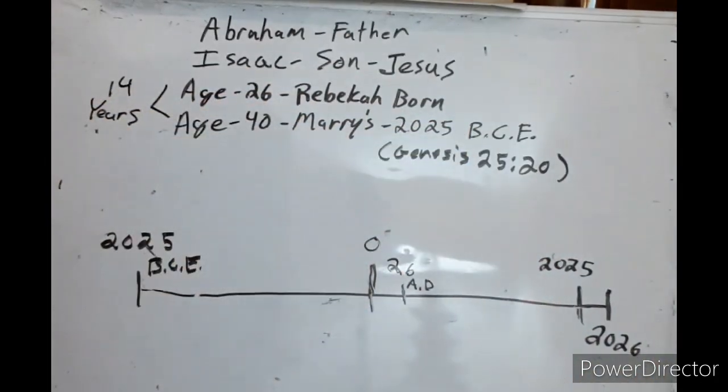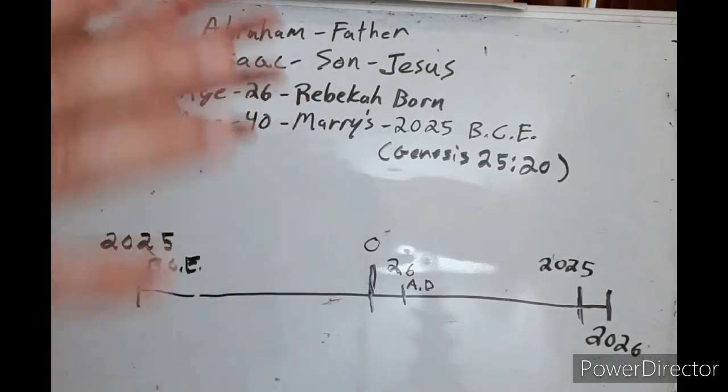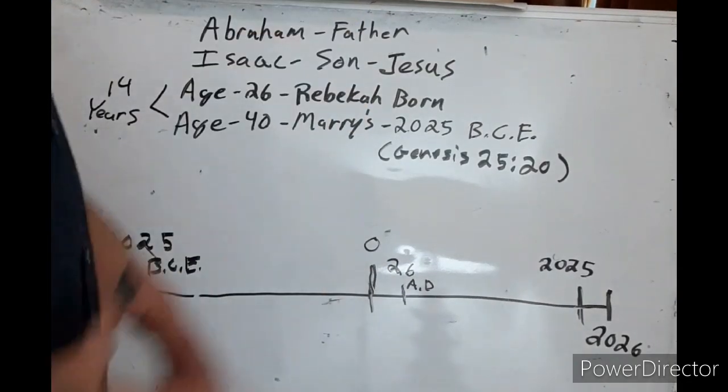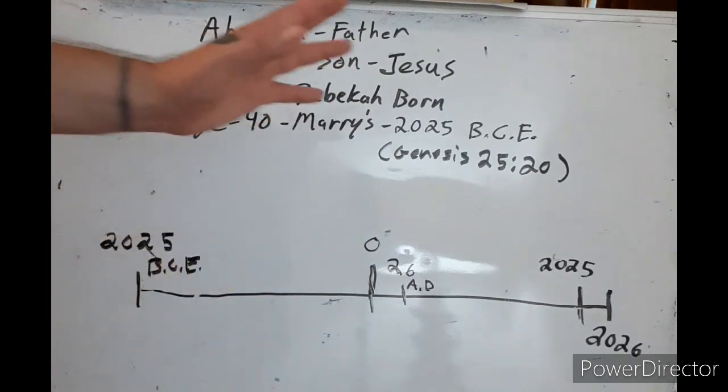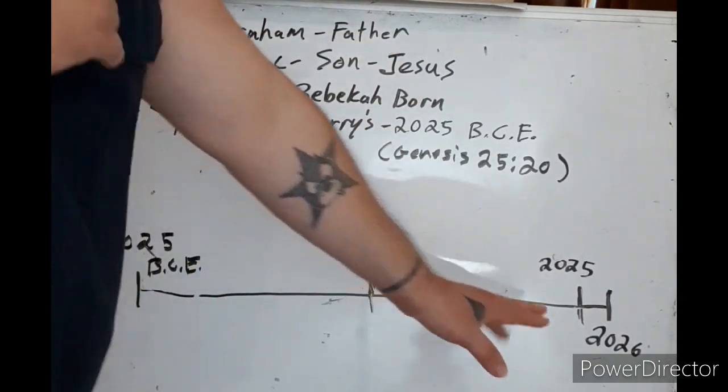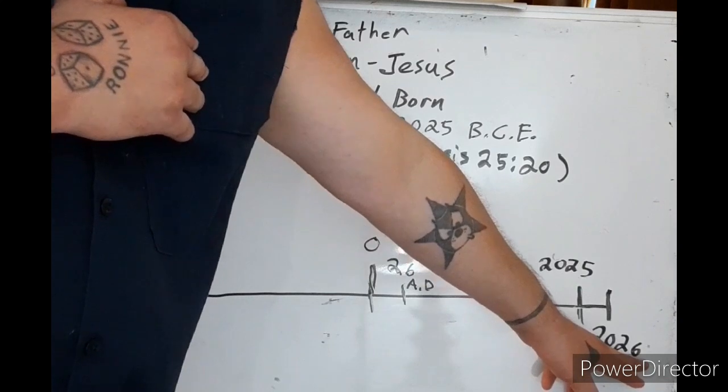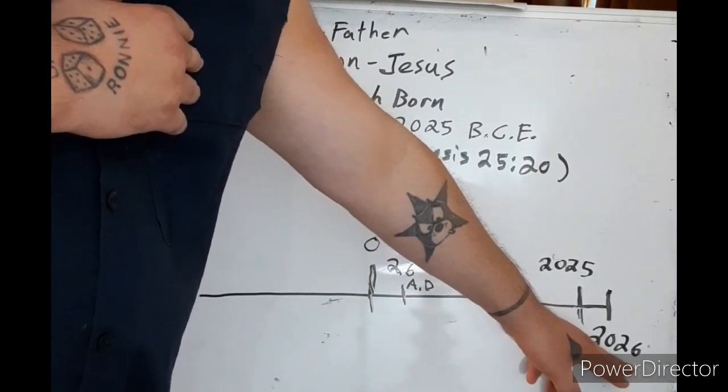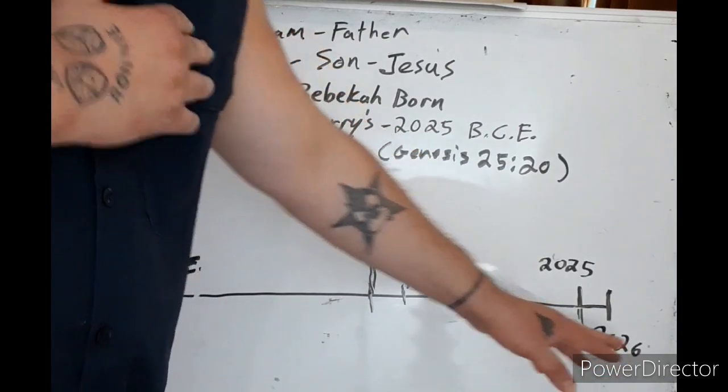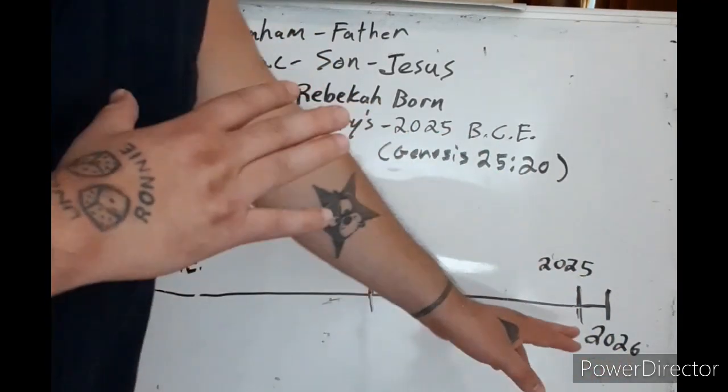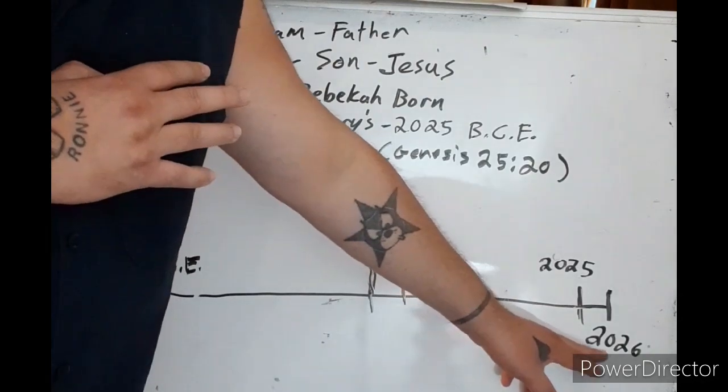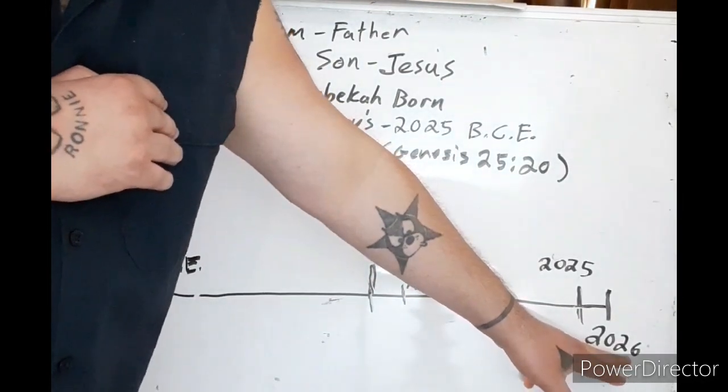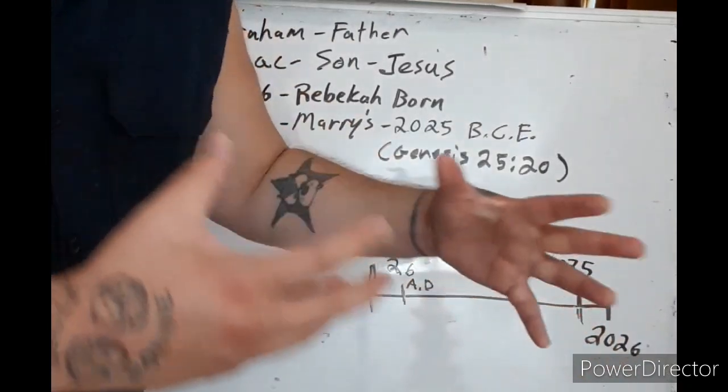Wow, right? I'm telling you guys. Now watch this, this is crazy right here. If you take the year 2026 and you are fruitful and multiply, 20 times 26, you get 520.